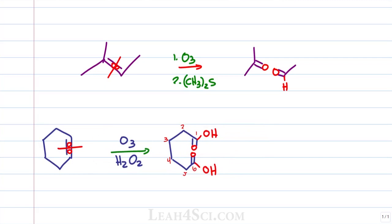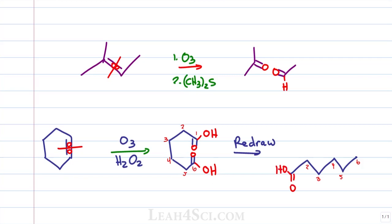What we have is a 6-carbon chain, so just draw out your 6 carbons. On carbon 1 we have a carboxylic acid, and on carbon 6 we also have a carboxylic acid — that's the same product.